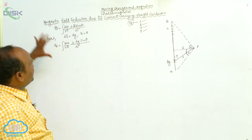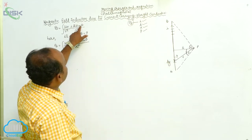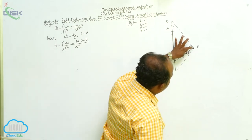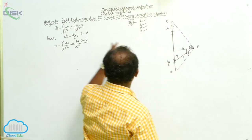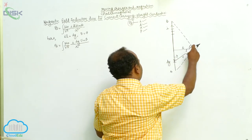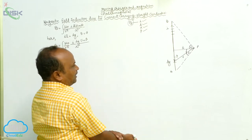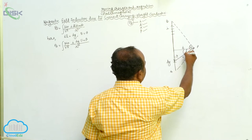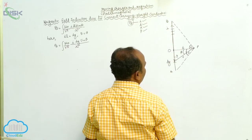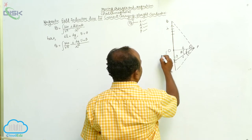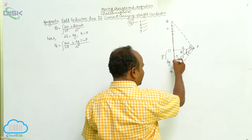By applying Biot-Savart's Law, the current I is given, the current element is dy, and sin theta is the angle between the current element and the line joining it to point P. The distance between the current element and point P is r, which is substituted accordingly. From point O — the foot of the perpendicular — the current element is at a distance y, with thickness dy.